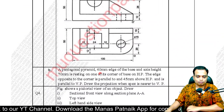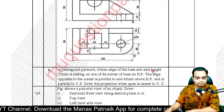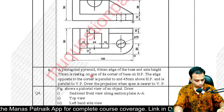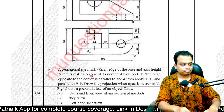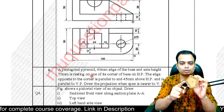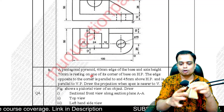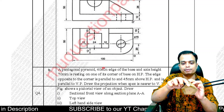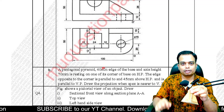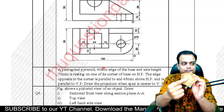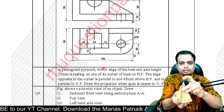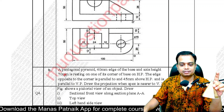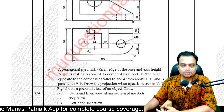We are talking about a pentagonal pyramid: 40mm edge of the base, and axis height is 70 millimeters. There are five corners on the base - you can see one, two, three, four, five. All base edges are 40 millimeters each. There is a center of the base, and the pinnacle or apex - the distance between these two points is 70 millimeters, also known as the axis.